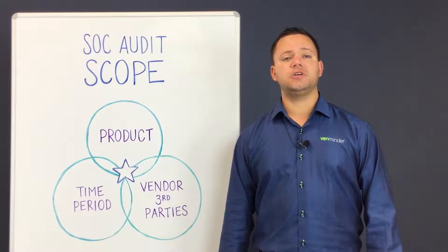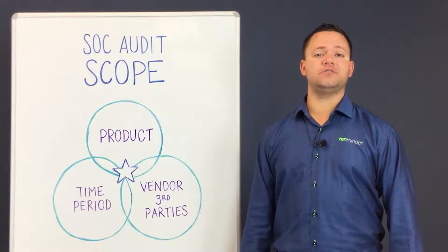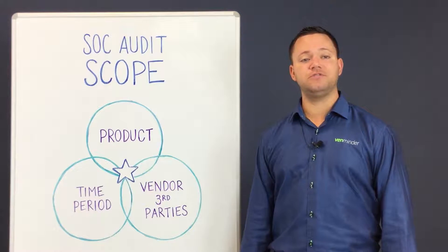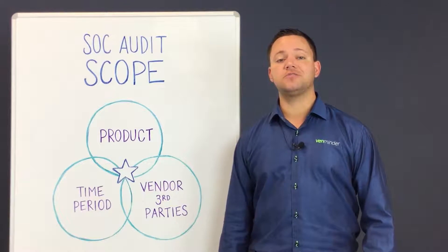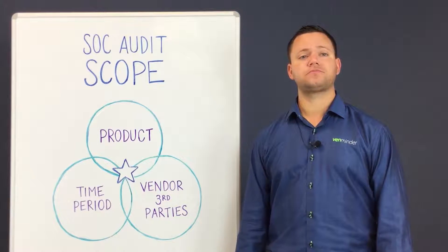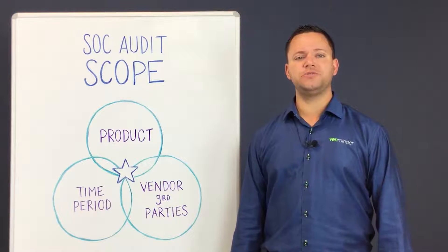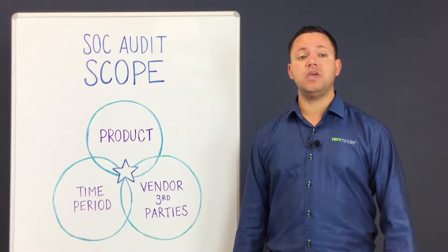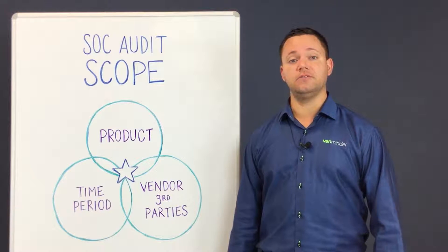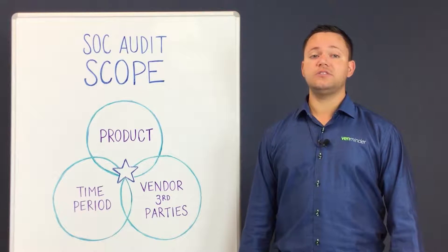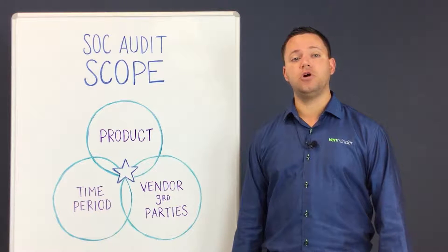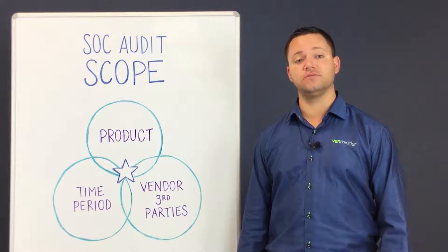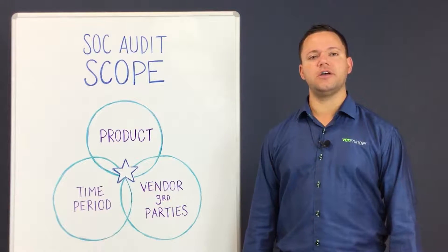This first question is here because many vendors, especially large vendors, have many different SOC reports available with different products covered under different SOC reports, and some products may not be covered at all. Make sure you read the scope statement and ensure the product you use is called out. If it's not, make sure to ask your vendor representative. Related to that, there are many products which require the review of multiple SOC reports in order to gain a full picture of the operating environment of the service or product.